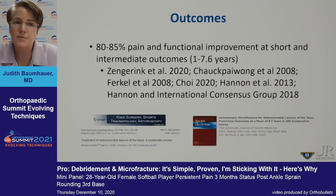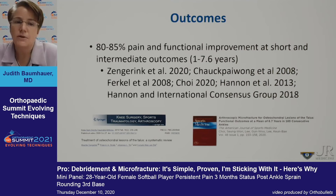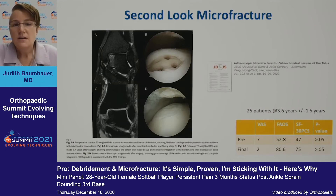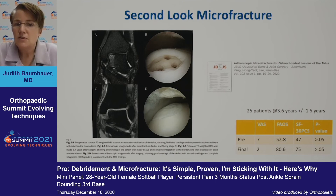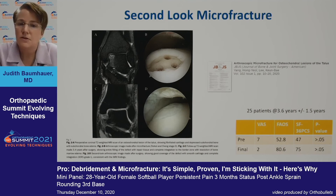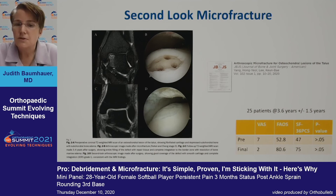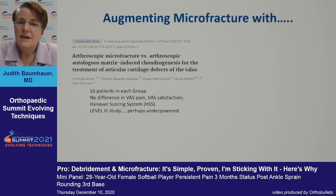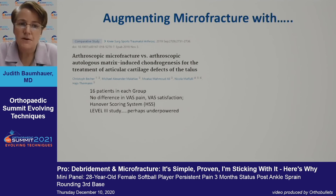What are the outcomes with this procedure? There is 80% to 85% pain and functional improvement at short and intermediate follow-up, out to 7.6 years. Second-look microfracture studies published in 2020 are notable: Kunbei Lee looked at patients at an average of 3.6 years and found that stable fibrocartilage was still present. That kind of follow-up data is very important. We are also now augmenting microfractures with various products, and other options exist if the initial surgery did not work.